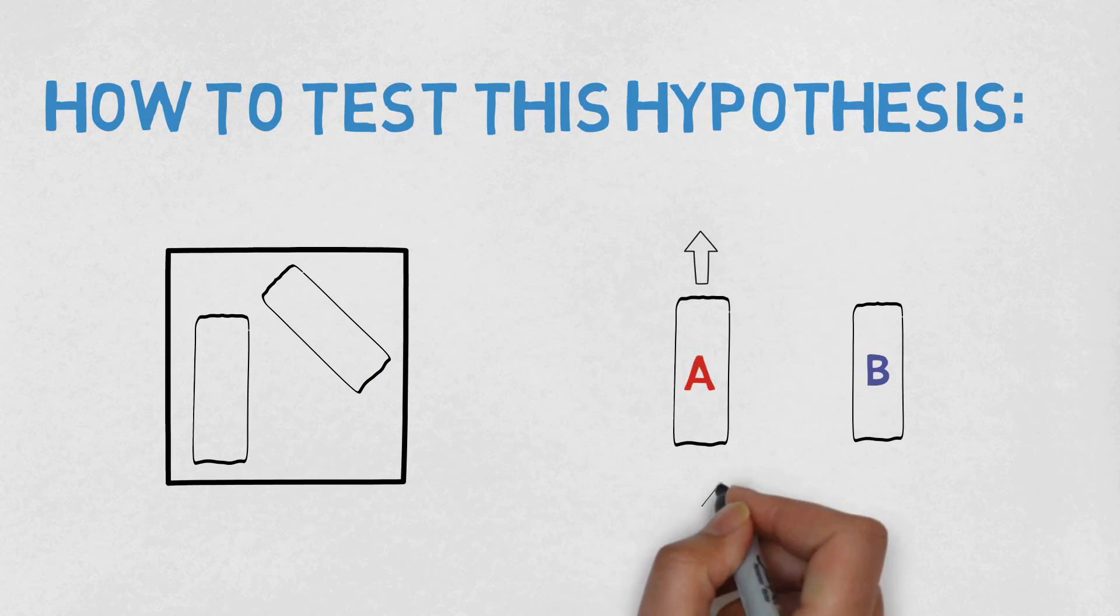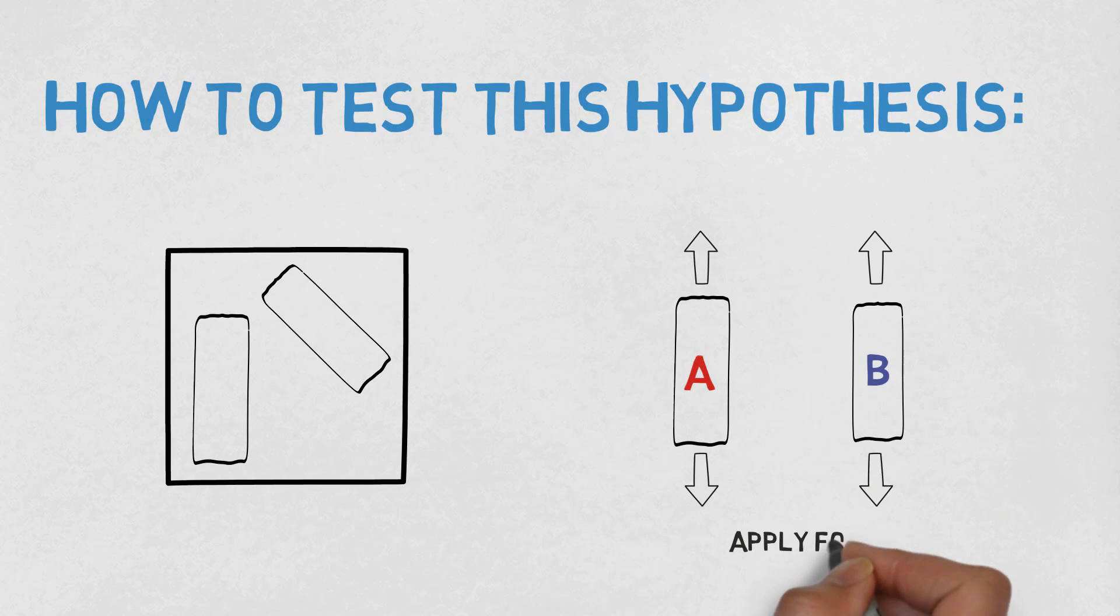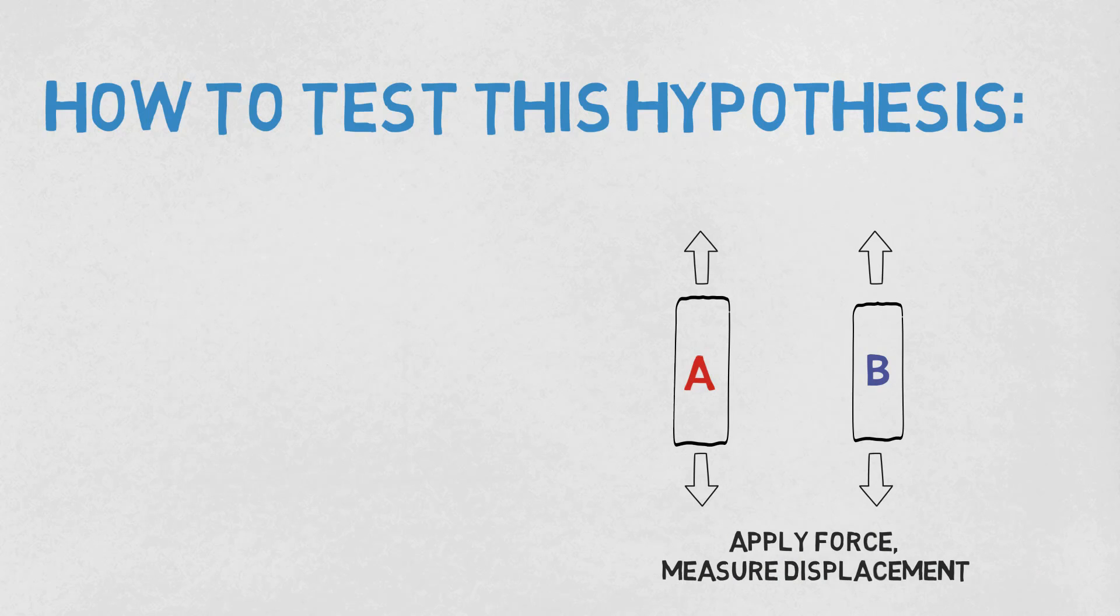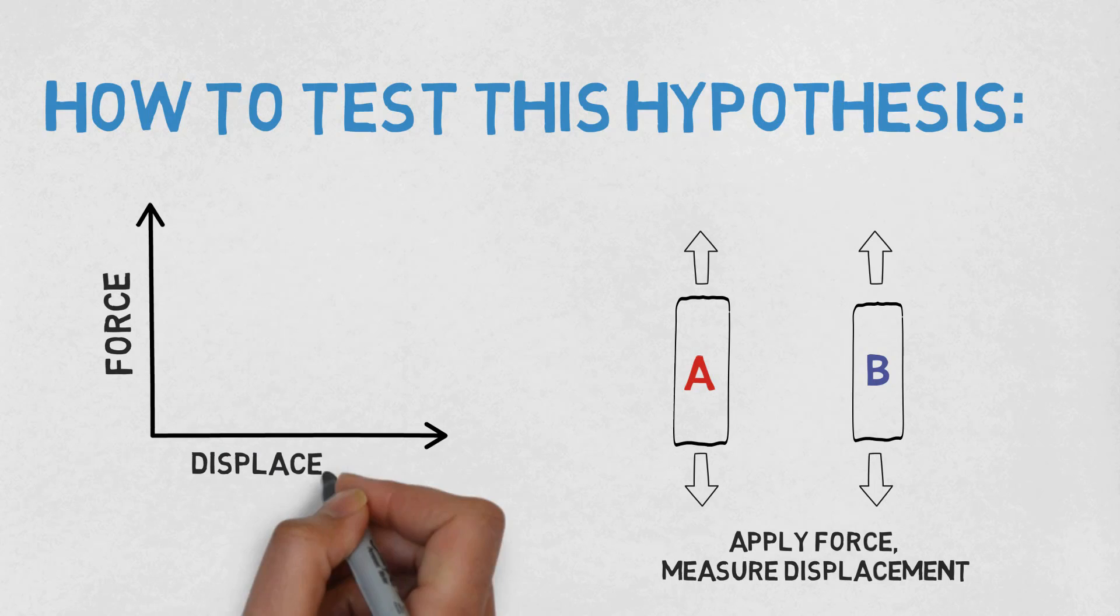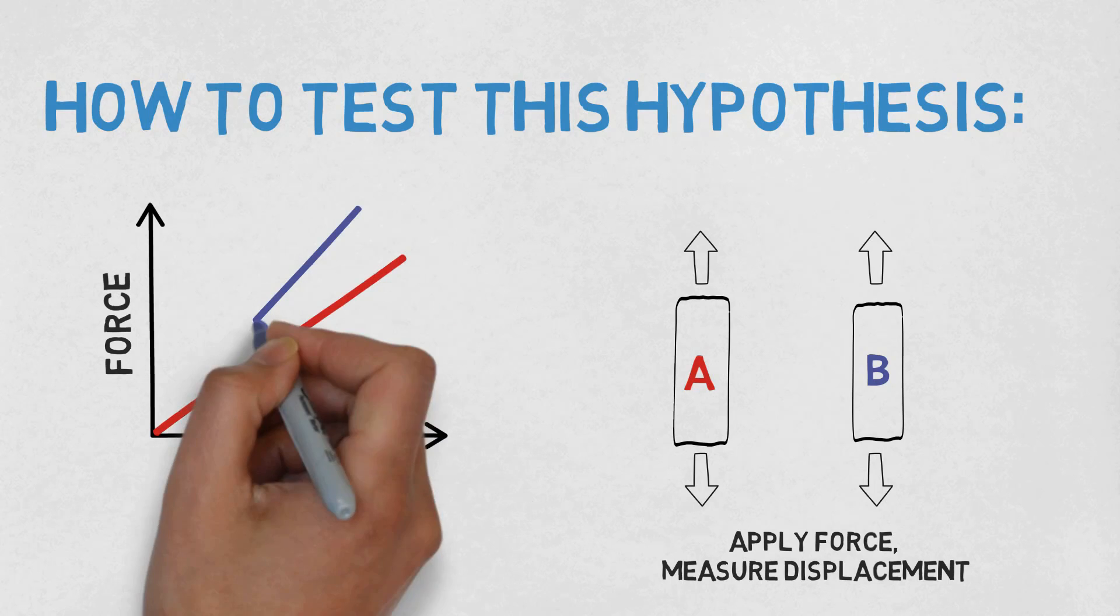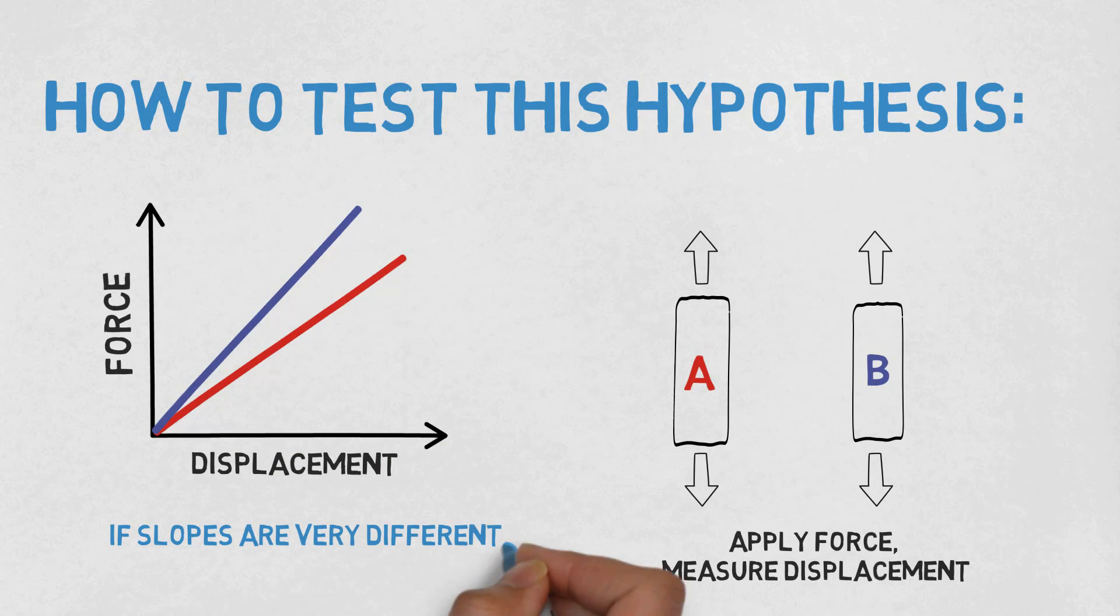We could then load these specimens in tension, measuring their force deflection behavior. What would we see if our hypothesis was wrong? Well, this would mean that the stiffness of the material would be different in the two directions tested. We would see this by seeing a large difference in the slope of the force deflection curve of our experiment.